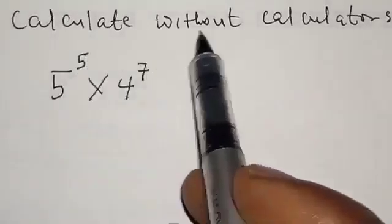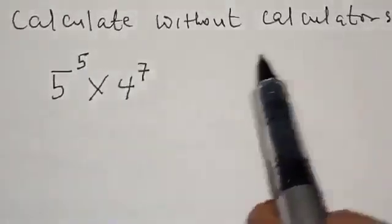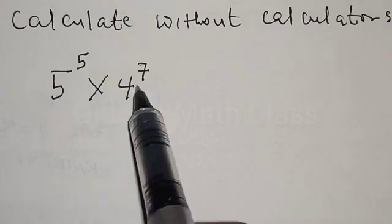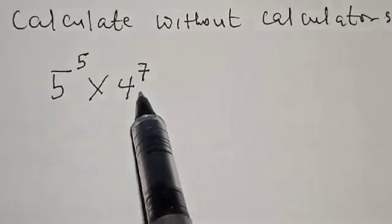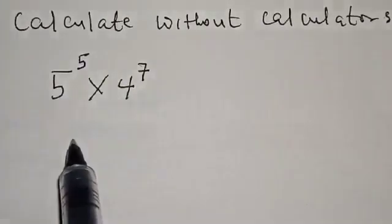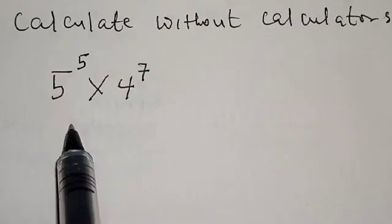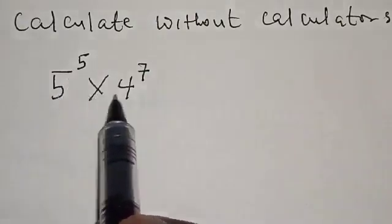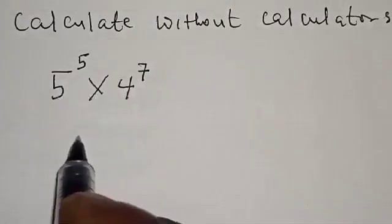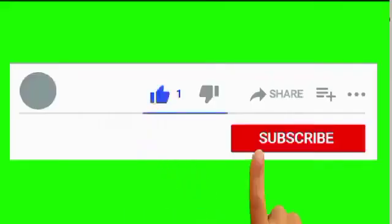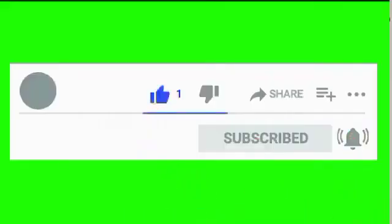Calculate without calculators: 5 raised to power 5 multiplied by 4 raised to power 7. Hi everyone, welcome to my class. In this class we want to look at how we can calculate 5 raised to power 5 multiplied by 4 raised to power 7 without using a calculator. But before we proceed, please don't forget to like, share, comment and subscribe.